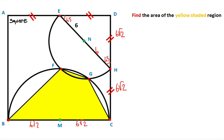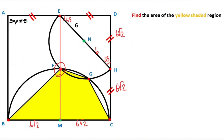After that, if we connect these three points like this, you'll notice that point F becomes the midpoint. Next step: here is also 45 degrees, and if we draw a perpendicular line from the center onto the chord like this, the chord will be divided into two equal parts.